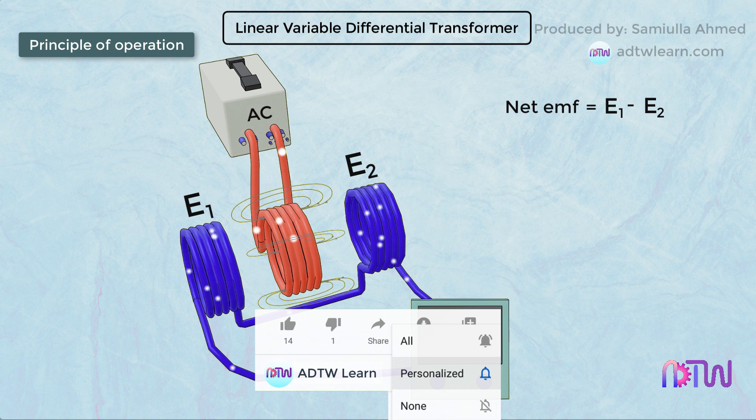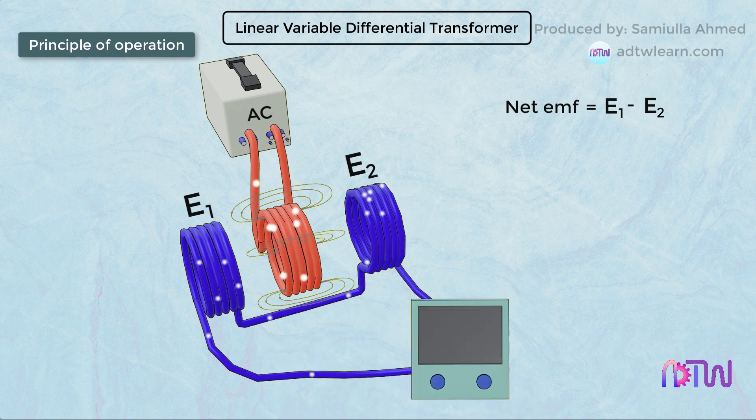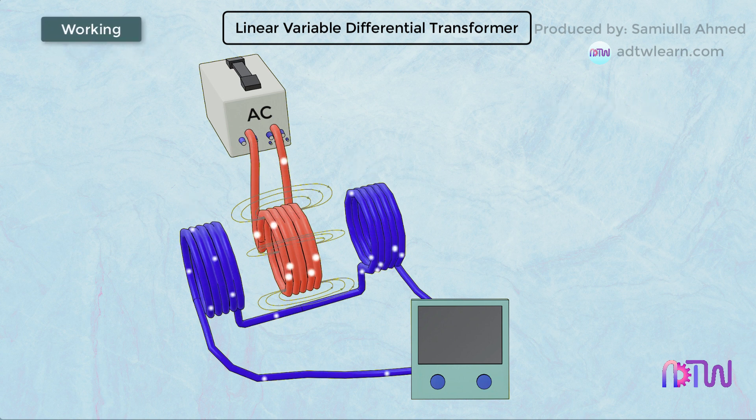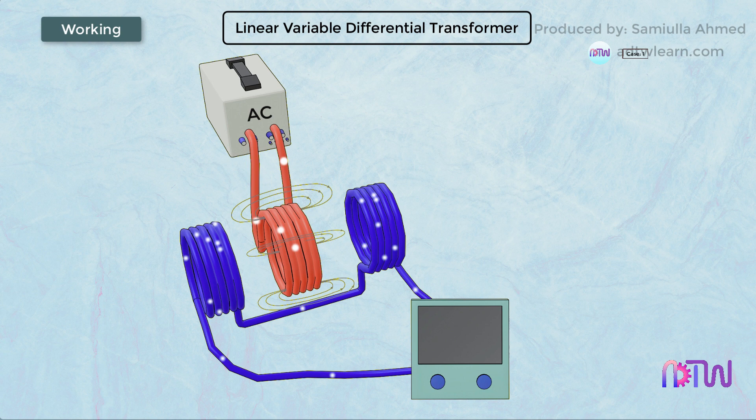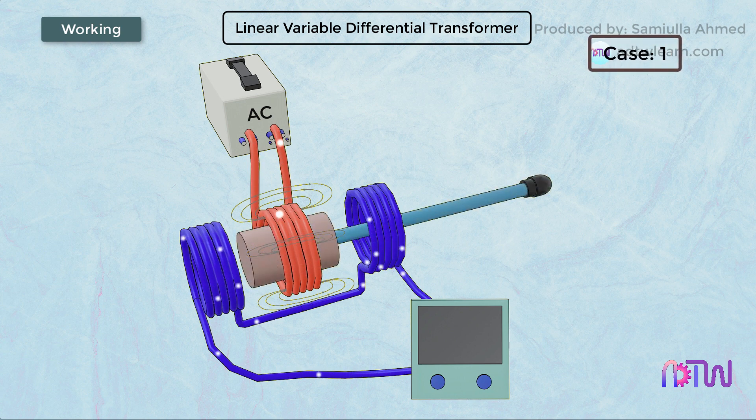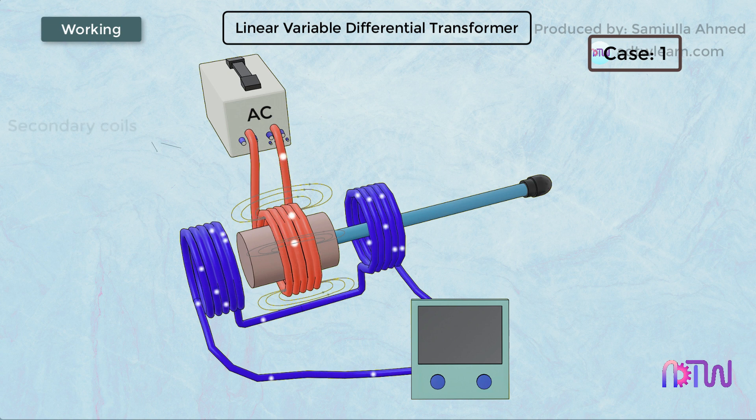Working: Based on the position of the soft iron core, there could be three cases. Case 1: When the core is at the center. When the core is at the center, equal voltage is induced in both the secondary coils.